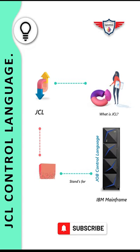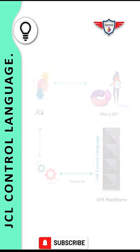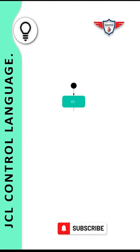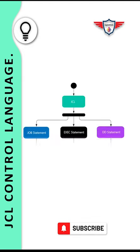JCL is one of the oldest and robust scripting languages. JCL is a combination of three different kinds of control statements: the first one is job card, the second one is execute statement, and the third one is DD statements. All these statements are combined to form a job, and this job is used to execute programs or utilities on mainframe.